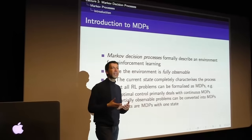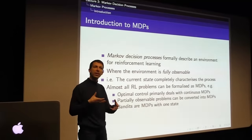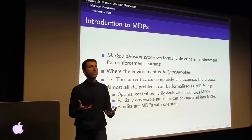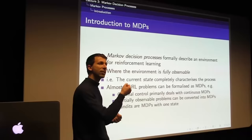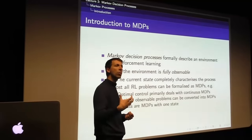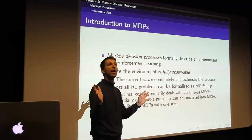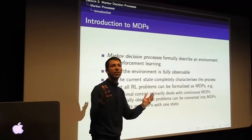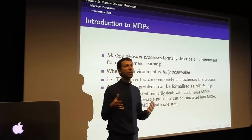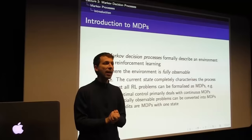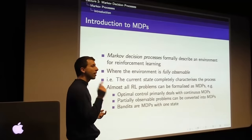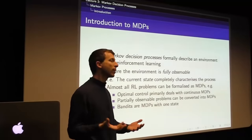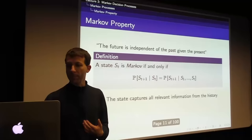Some of the simplest cases are what's known as bandits, a very common formalism. You get a set of actions, take an action, get some reward, and that's the end of your task — like presenting an advert to a user on the internet that either gets clicked or doesn't. This is just a Markov decision process with only one state. If we can solve MDPs, we can solve all of these different cases. It's really fundamental.